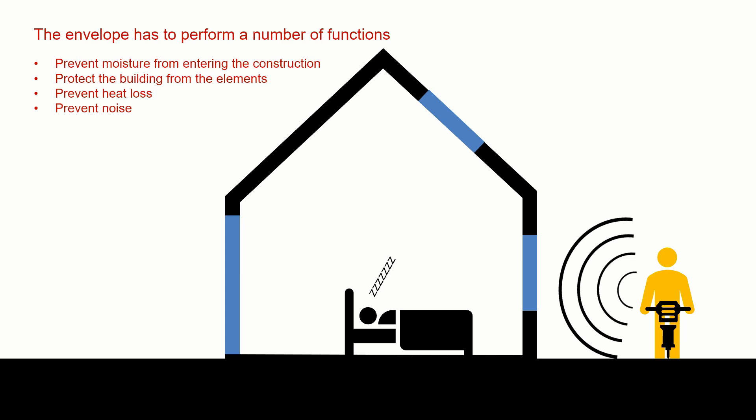When we're in our buildings, we tend not to prefer nuisance noise from outside to disturb us. We don't like buses, traffic noise, people passing in the street or roadworks. So the materials that we choose for the building envelope and the details that we choose for how they are constructed and joined together at junctions can help prevent noise from entering the building.